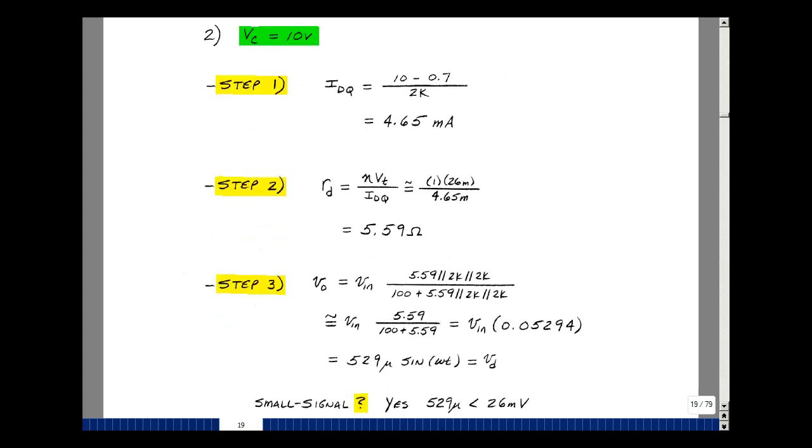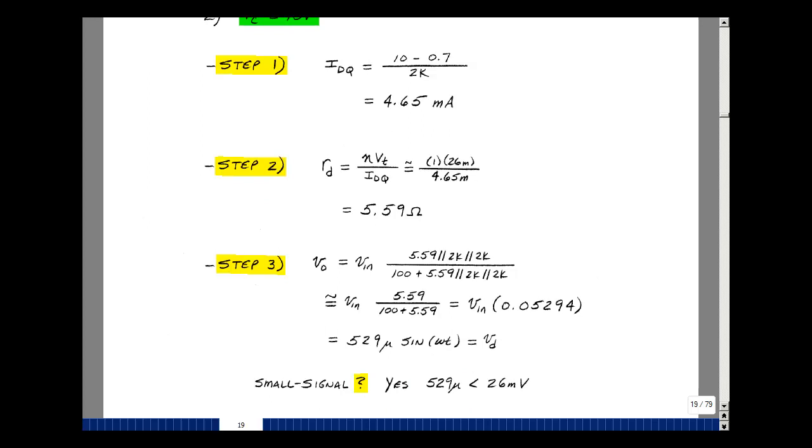Our voltage divider now is 5.59 with 2K in parallel with 2K. But again, this is going to be 1K, and that's so much bigger than 5.59, so you could roughly throw this away. You just have 5.59 over 100 plus 5.59. That's a lot smaller number now. So multiplying that by V_in, I've got 529 micro times the sine of omega t for the AC term.